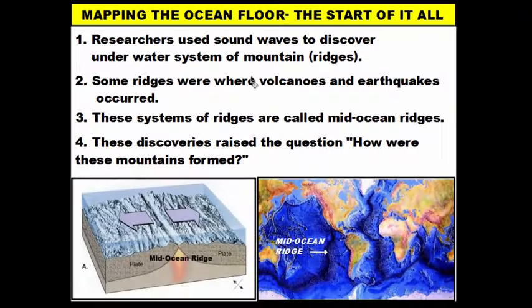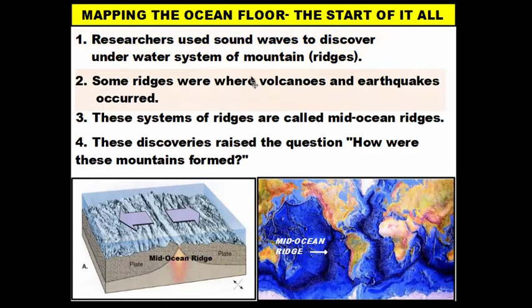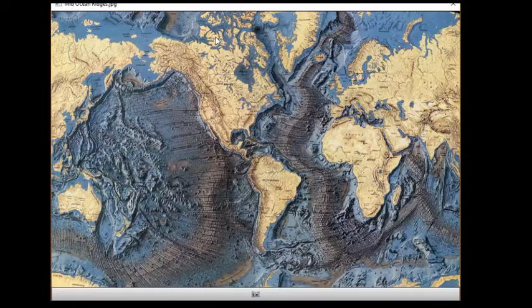When they used sonar, it developed a picture showing that the ocean floor was not flat as imagined. They discovered the ocean floor is actually filled with mountain ranges, which they called ridges. They also noticed that earthquakes took place in some of these locations. To get a better look at what these ridges look like, we'll look at this graphic — which you might recognize as the opening graphic.